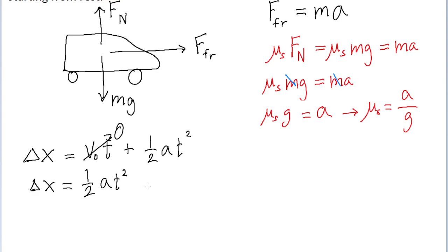And then we can solve for acceleration by multiplying both sides of the equation by 2, and dividing both sides of the equation by t squared. So we find that acceleration is equal to 2 times the displacement divided by the square of the time.